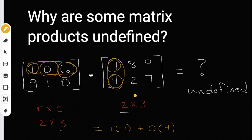So that's why this is undefined. The number of columns in the first matrix has to be the same as the number of rows in the second matrix. These two inside numbers always have to be the same in order to multiply. That's what I'm trying to explain today - some matrix products are undefined because the inside numbers don't match up. I hope that helps.